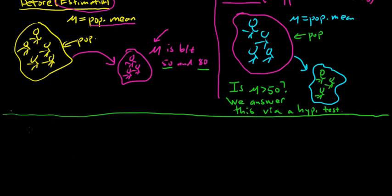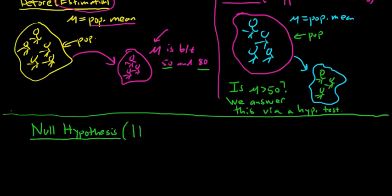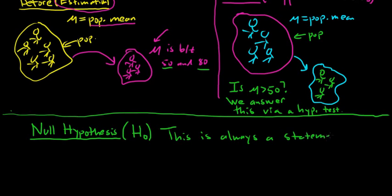In every hypothesis test you have something called the null hypothesis. The symbol is H with a subscript zero — H-naught or H-sub-zero, I'll usually just say H-zero. The most important thing is this is always a statement of equality. Your null hypothesis will always have an equal sign, no matter what, always.